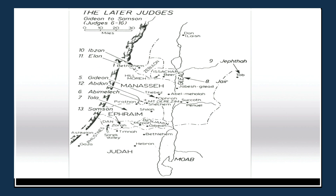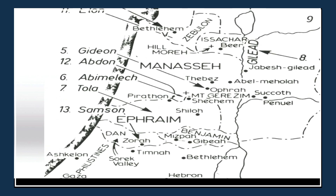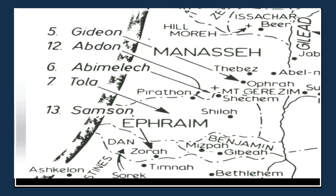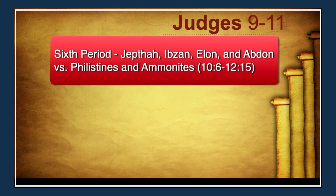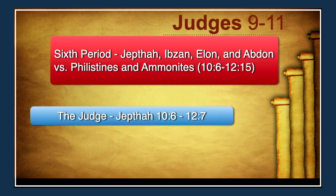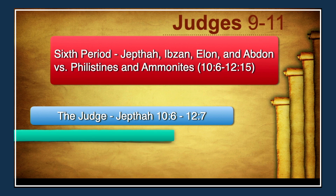Here's a map of the location of these latter judges. We have Abimelech, Tola, and Jair — number 8 — in Gilead. We'll study Jair with this, finishing this lesson, and then we'll take up the exploits of Jephthah in the next lesson because there's a lot to look at. Beginning at chapter 10, verse 6, we'll start Jephthah and stop at the end of this chapter, finishing him out into chapter 11.